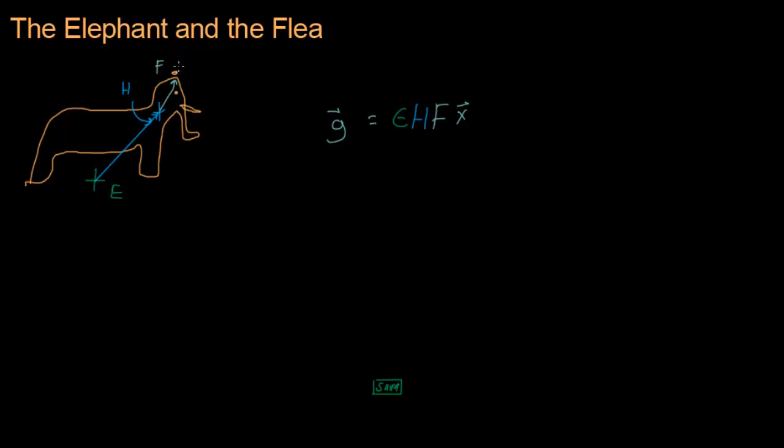So if you have this vector in the local space of the flea, then you can get a global vector. And if you want to do the opposite, if you have a global vector and you want to see where he is in relation to the flea, it's the same process we've been looking at. You invert the elephant matrix, and then you invert the head matrix, and then you invert the F matrix, and that'll spit you out the X vector. So we're in the global space, and then we put it into the elephant local space, and then into the head local space, and then into the flea local space.